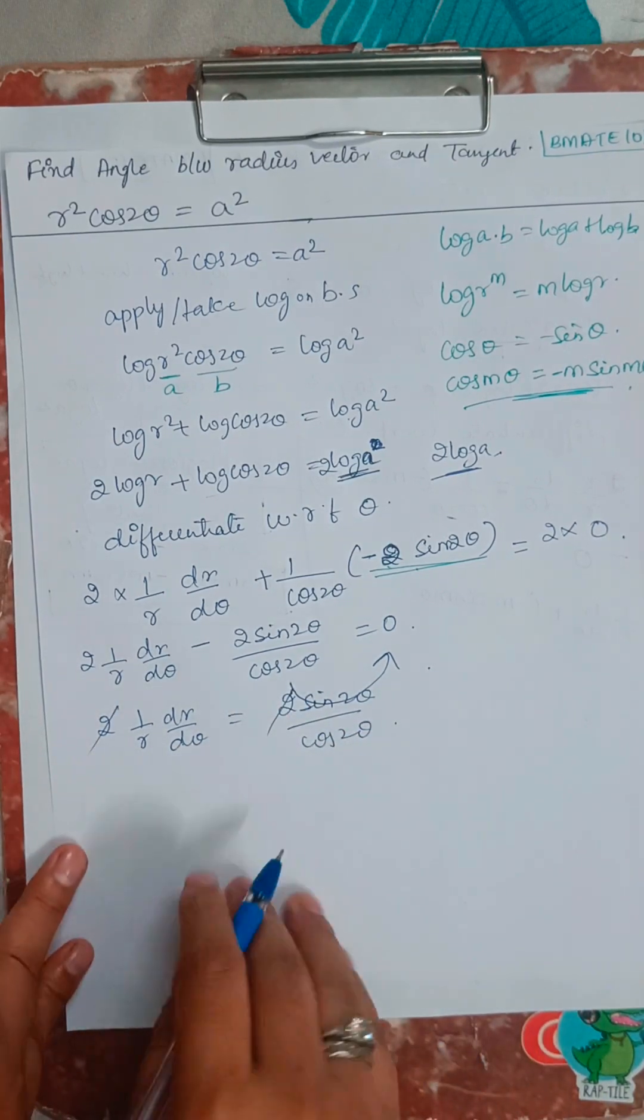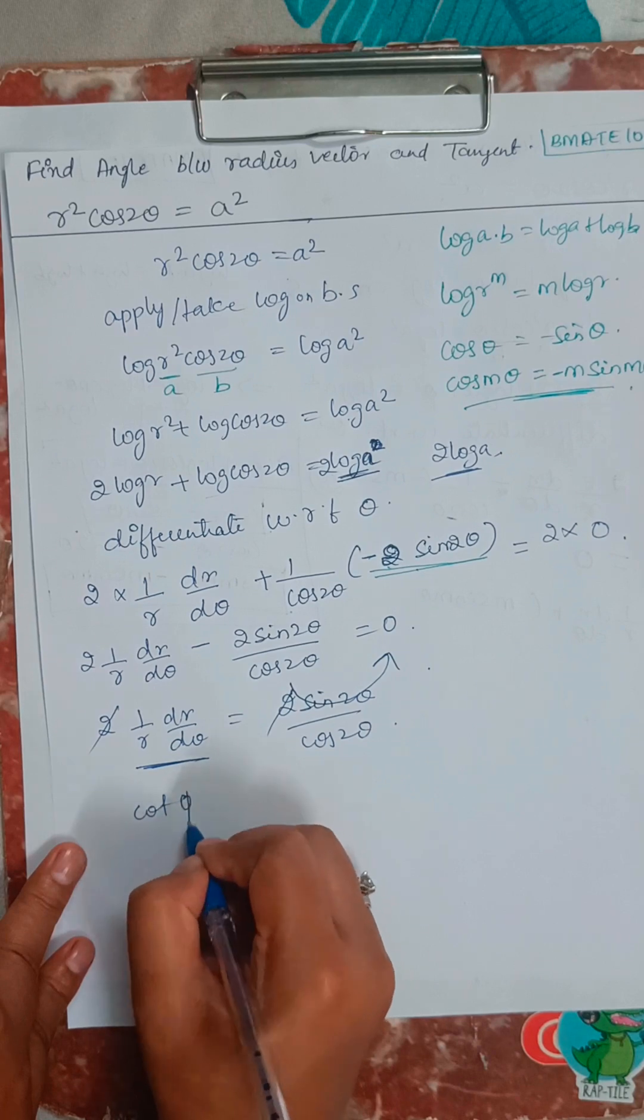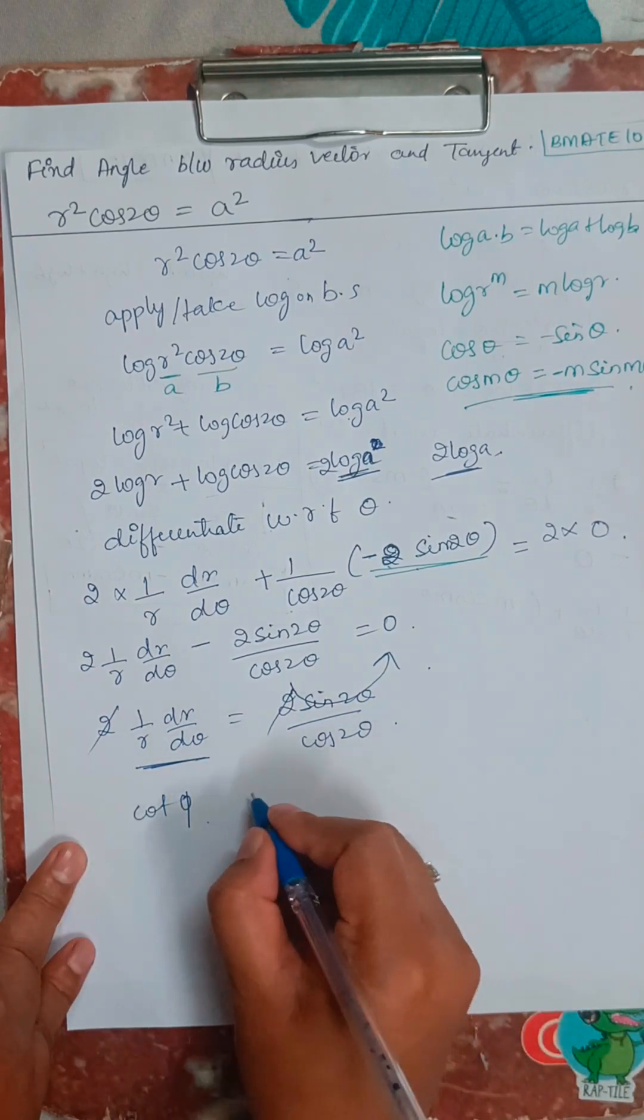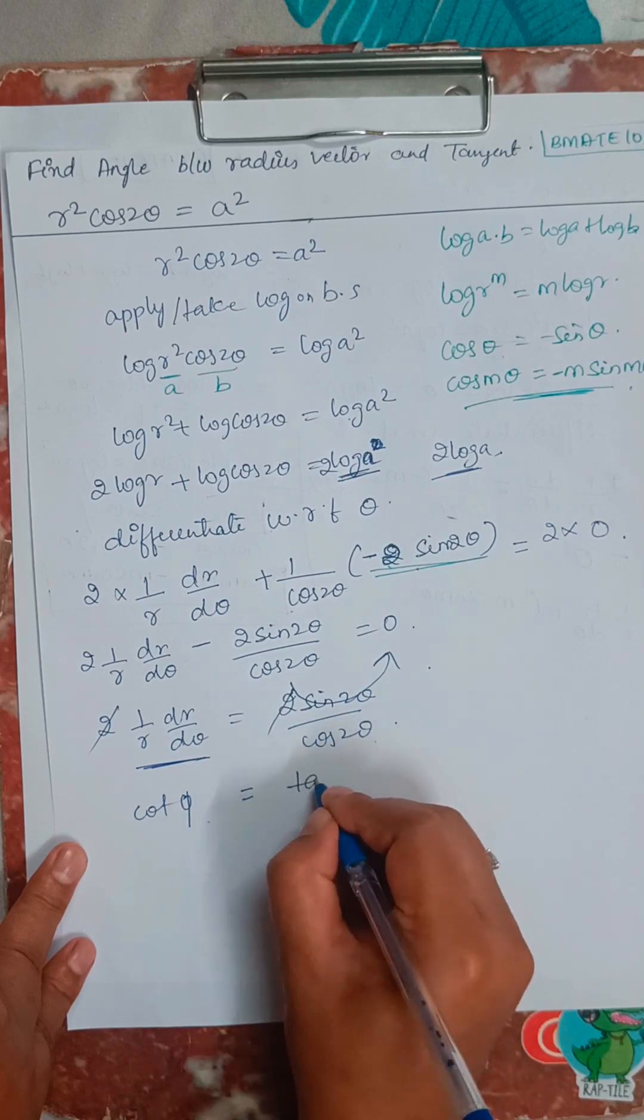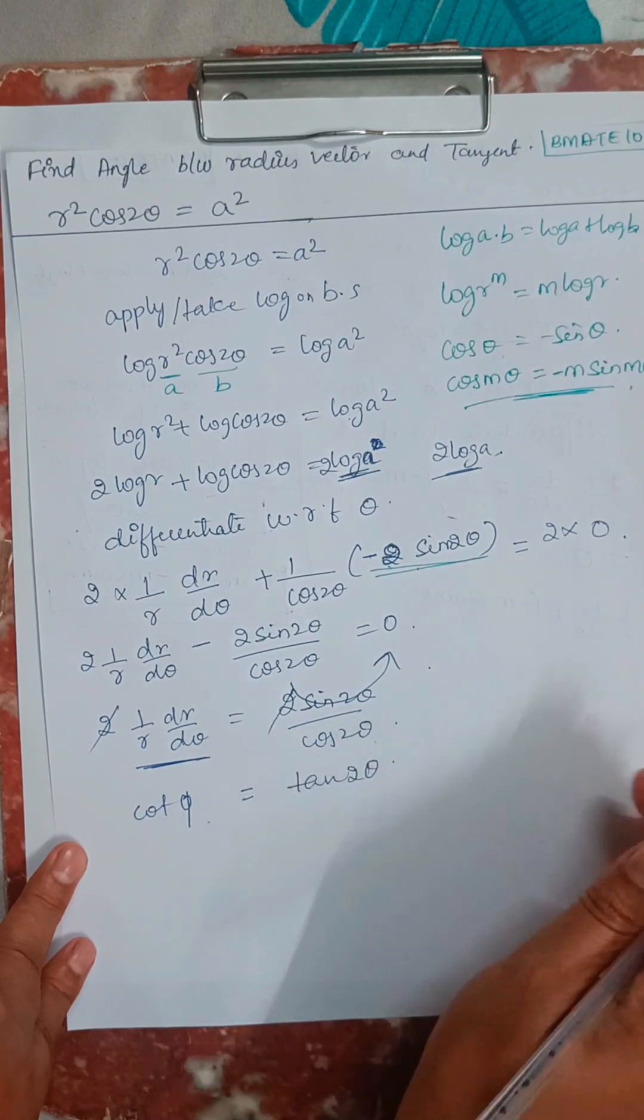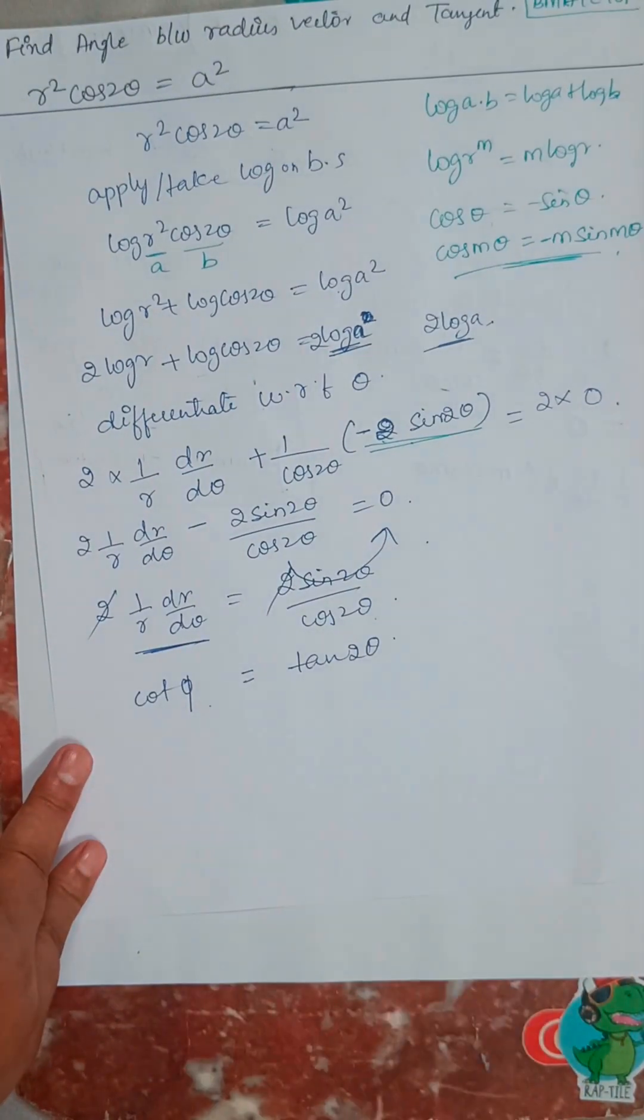2 and 2 will get cancelled. So this, if you know, this is nothing but cot phi. Which equals sin 2 theta by cos 2 theta, which is nothing but tan 2 theta. We got it.